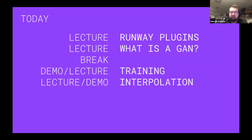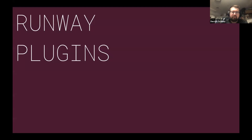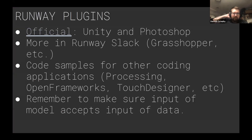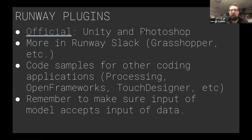We'll cover a bit more of interpolation as well as looking at how to export a bunch of images using Runway. So, Runway does support a bunch of plugins. There are two official ones — Unity and Photoshop. I personally don't use Unity, so I don't know much about the Unity plugin. But if you're interested, you can go to the link and check out more about it. The Photoshop plugin they've supported for a while now — it's pretty interesting. There are also unofficial plugins built by the community. If you check out the Runway Slack channel, there are folks talking about different plugins they have.